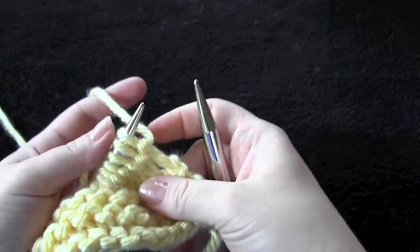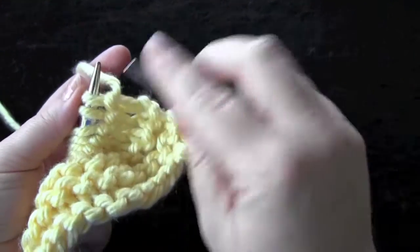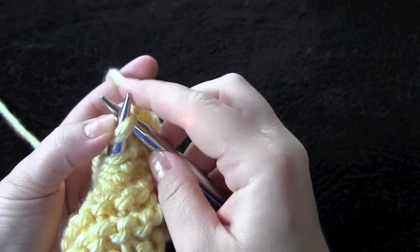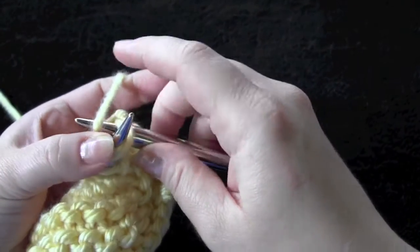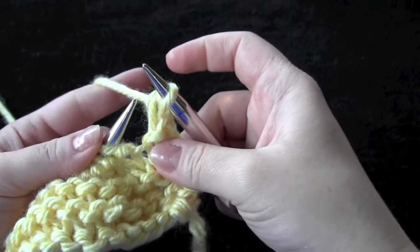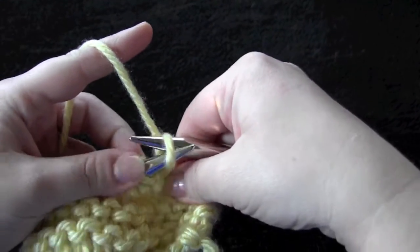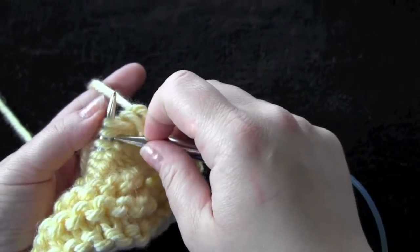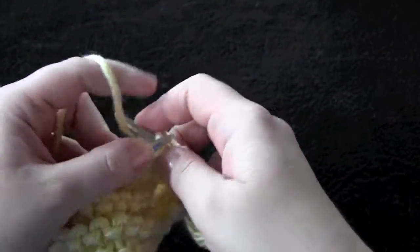Instead of knitting two together through the back loop, you can just knit two together as you normally would through the front loops. Put the stitch back on your left needle. Knit two together through the front loop.